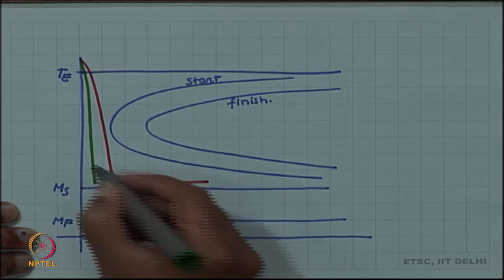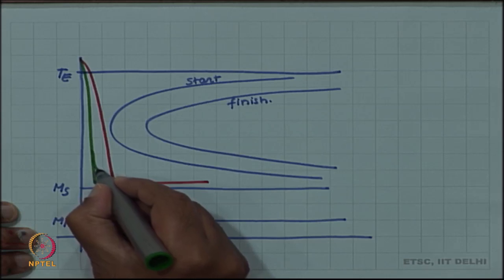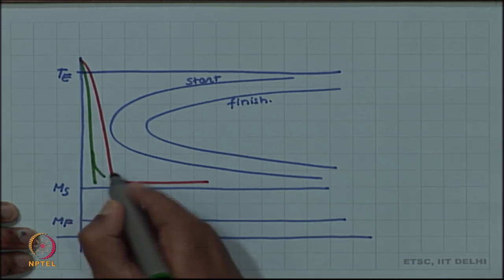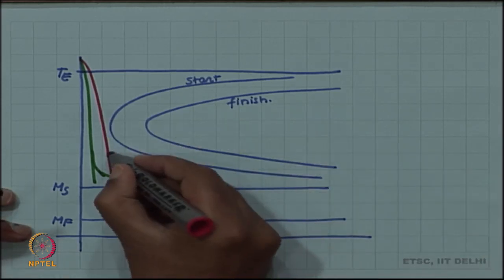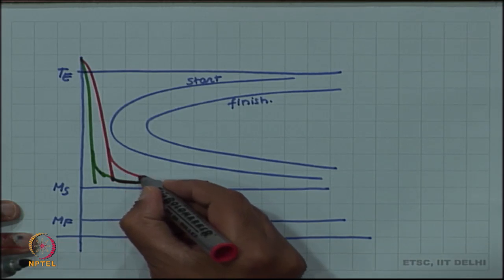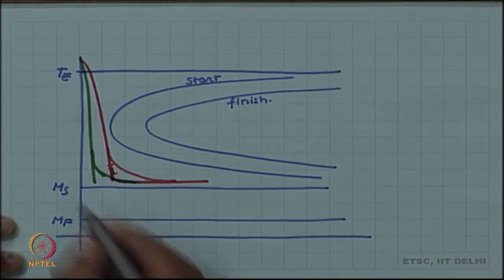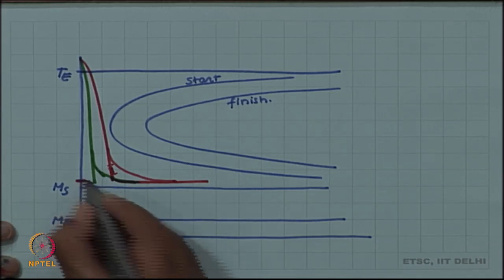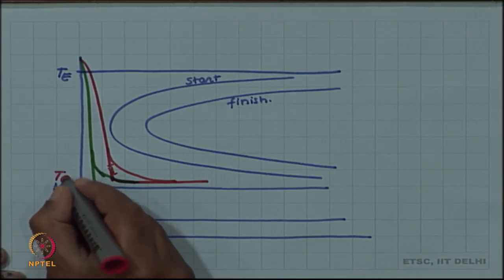The inside, now because we are not cooling directly, the inside will also—maybe this diagram also needs to be modified from here because now the quenchant temperature is higher. This is the quenchant temperature, let us call that Tq.